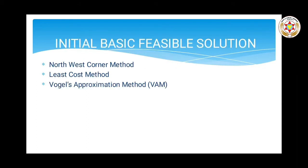An initial basic feasible solution is a first attempt to match supply and demand. For it to be a feasible solution, the number of occupied cells must equal one less than the sum of the number of origins and destinations — that is, m plus n minus one. The occupied cells must also be in independent positions; dependent positions allow a round trip from an occupied cell back to itself using only horizontal and vertical movements with right-angle turns at occupied cells.